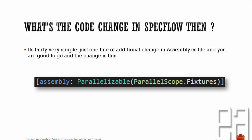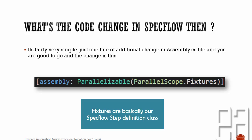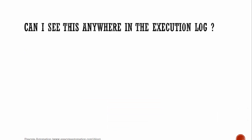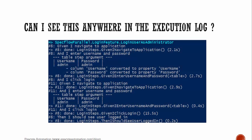The parallelizable scope is set to Fixtures. So parallelization is done at the fixture level — if you have multiple fixtures, it will parallelize those fixtures. Fixtures are nothing but the classes of our SpecFlow steps. You can see this in the console when running the NUnit console runner: there will be hash 8 and hash 11, where hash 8 is one thread executing one specific scenario and hash 11 is a different thread executing a different scenario — two different scenarios executing in parallel.